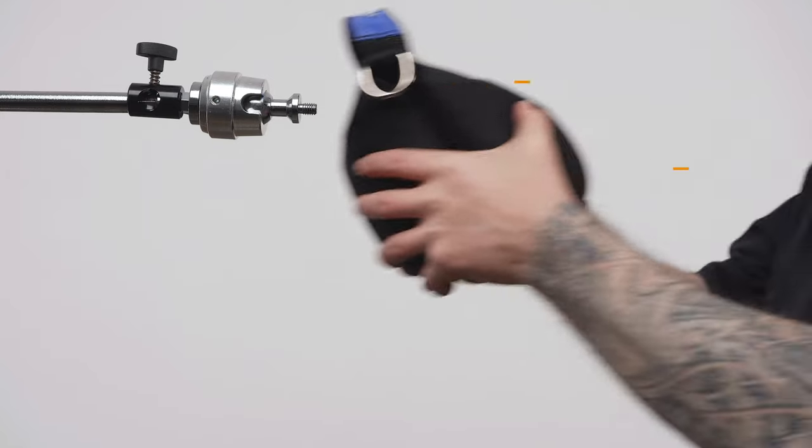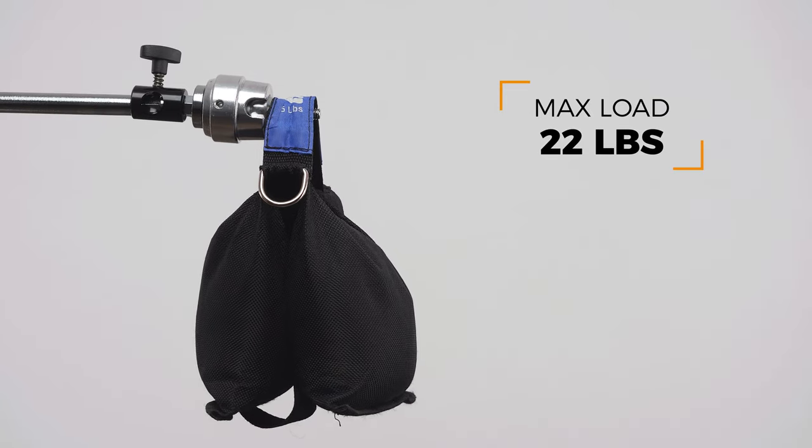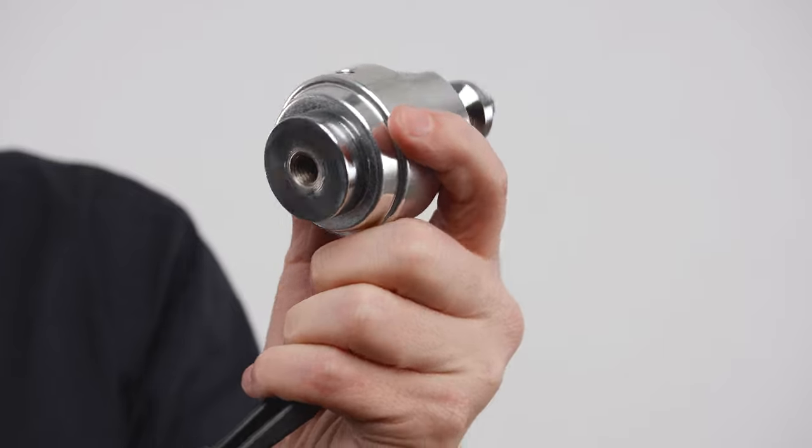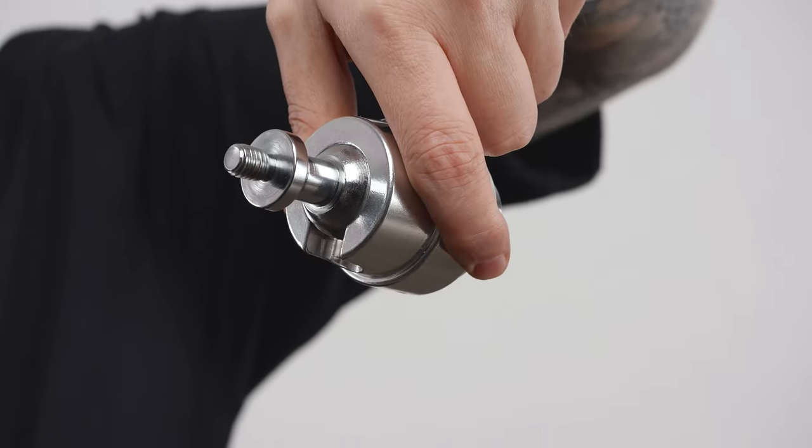The ball and socket joint is quite strong and holds an impressive 22 pounds. The Supergrip ball head consists of a 3/16th female thread on the bottom and a 3/16th male thread on top.